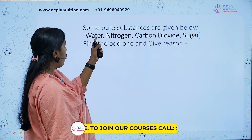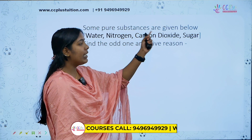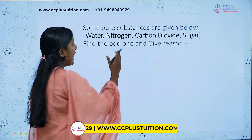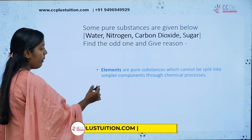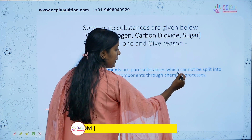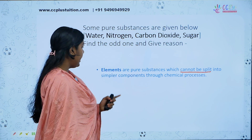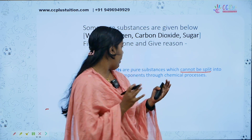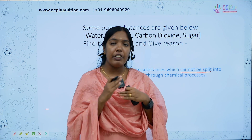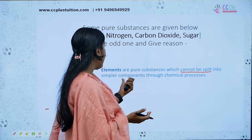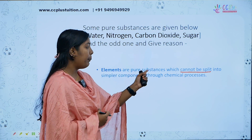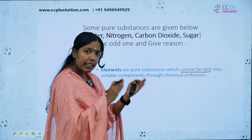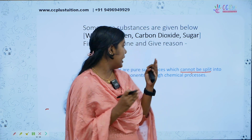Next question: Some pure substances are given below — Water, Nitrogen, Carbon dioxide, Sugar. We are going to find the odd one and give a reason. Elements are pure substances which cannot be split into simpler components through a chemical process. That means you cannot further split these materials — so elements are pure substances which cannot be split into simpler components.